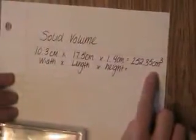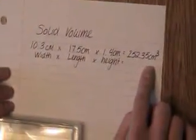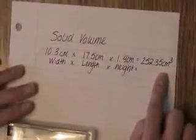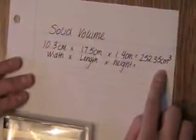You always have to put your unit. Now, the other way to measure volume is if you have a liquid. Liquids are not solid, so we cannot use a ruler. Instead, we have to use a beaker.